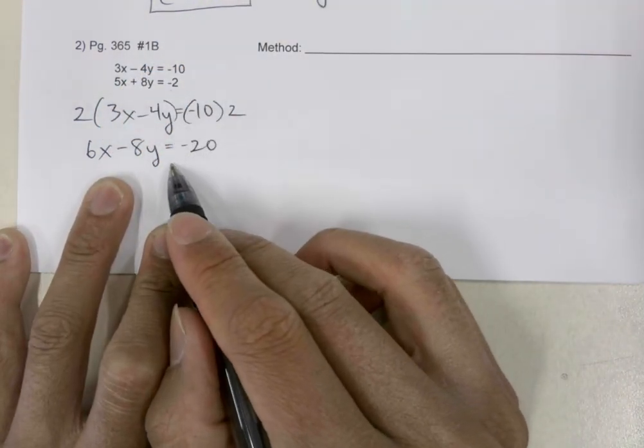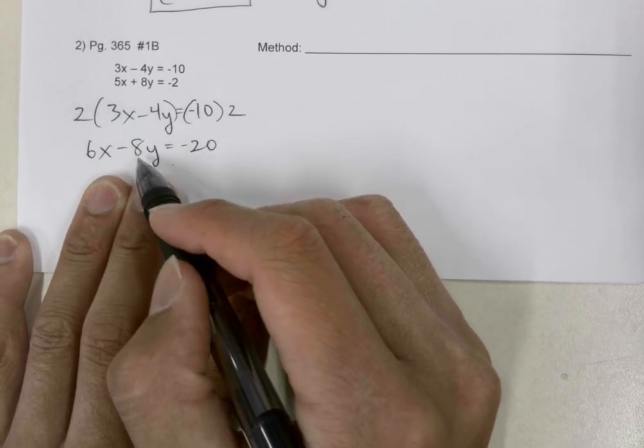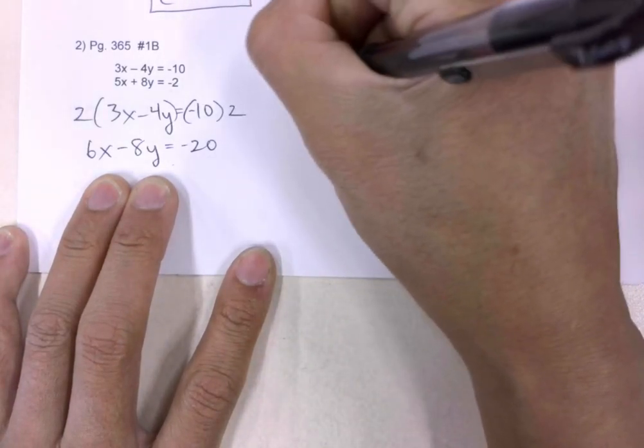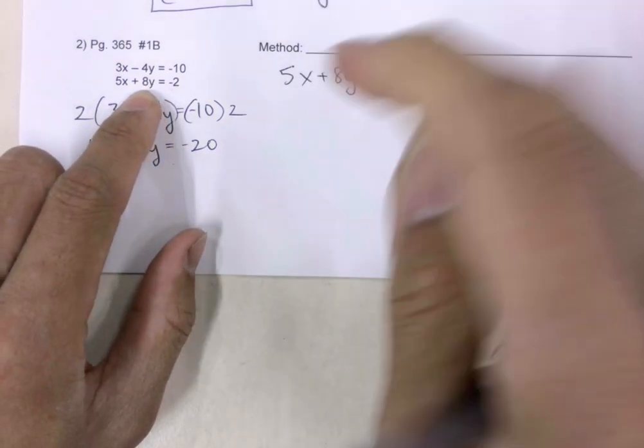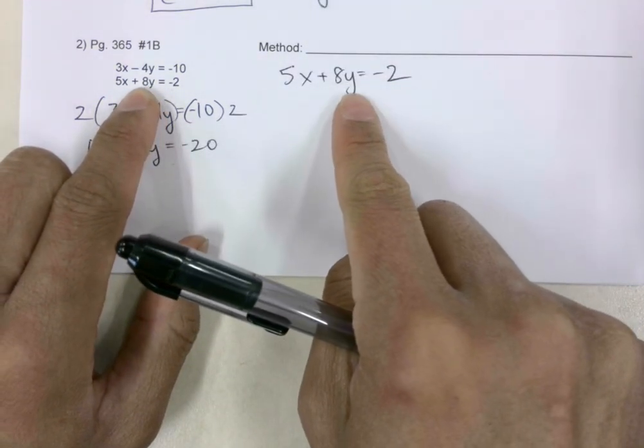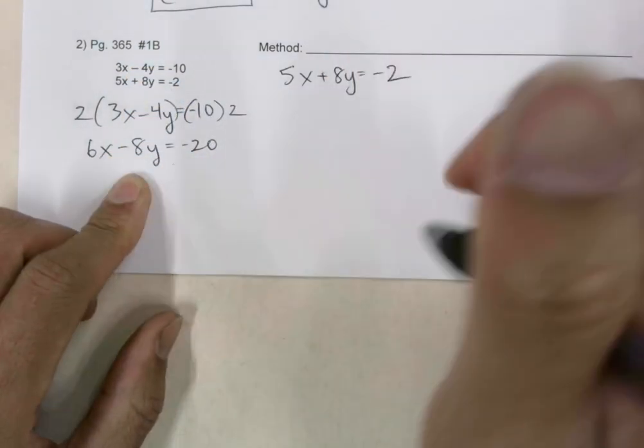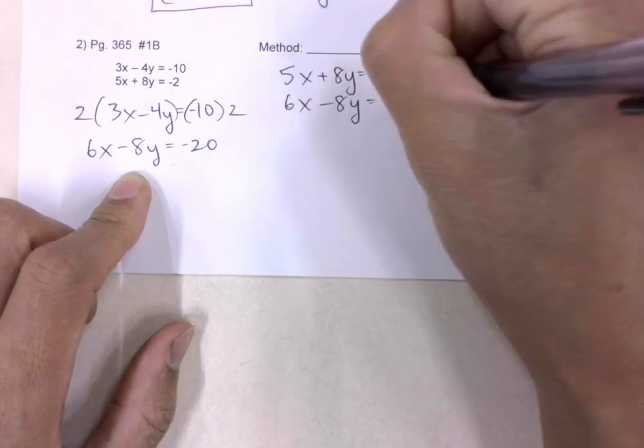Now we're going to stack our equation up with equation B. So we have 5x plus 8y equals negative 2. I'm moving this equation over to here, and then I'm taking my equation A that I transformed and putting it right underneath: 6x minus 8y equals negative 20.